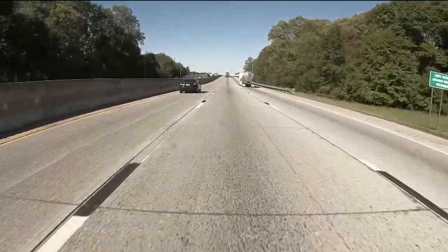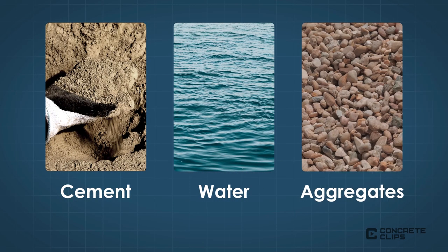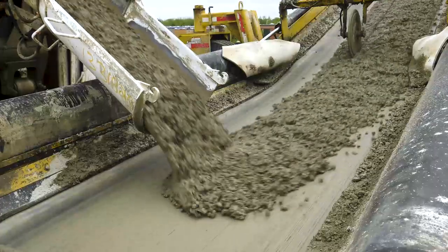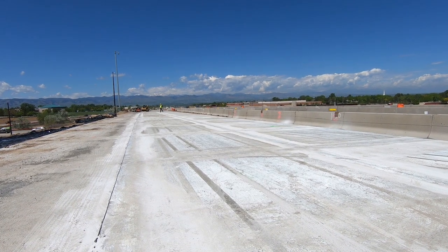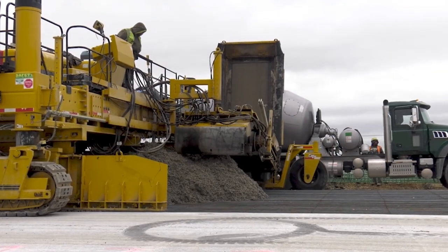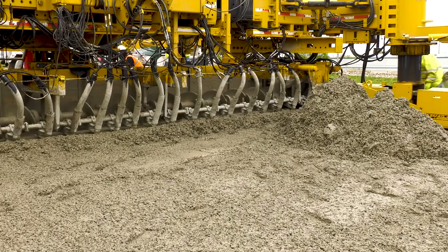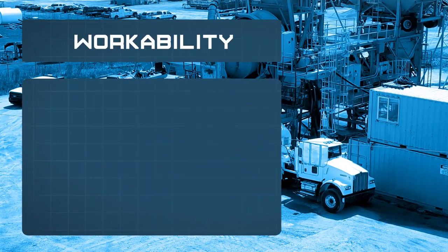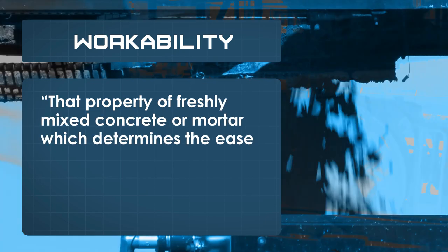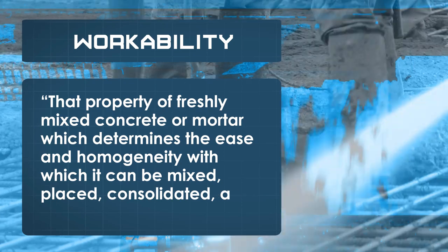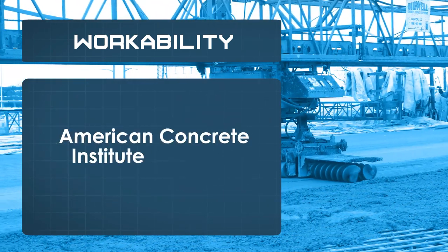In its simplest form, concrete consists of cement, water, and aggregates or rocks. To meet design expectations and get good long-term performance from hardened concrete, it is necessary to place the concrete mixture properly before it hardens. That is where workability comes in. Workability of concrete is the property of freshly mixed concrete that determines the ease and homogeneity with which it can be mixed, placed, consolidated, and finished, as defined by American Concrete Institute standard 116R-90.